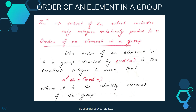Next, we discuss the order of an element in a group. If we consider a group with a set of elements and a defined operation, the order of an element a is denoted by ord(a). The order of a is the smallest positive integer i such that a raised to the power i is congruent to e (mod n), where e is the identity element.